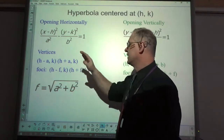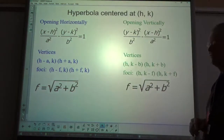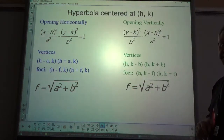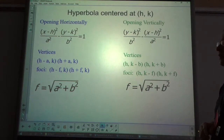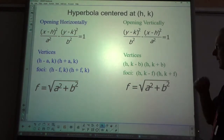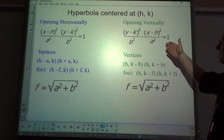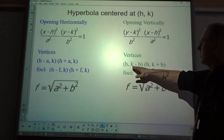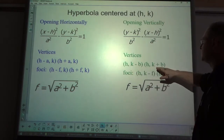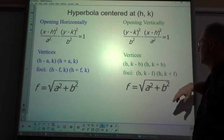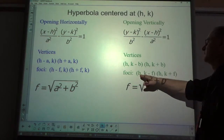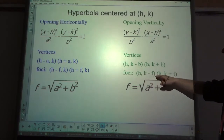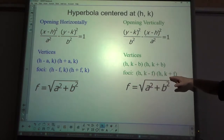For the hyperbola, f is found by taking the square root of the two denominators added together. For a vertical hyperbola, the vertices are (h, k minus b) and (h, k plus b), and the foci are (h, k minus f) and (h, k plus f).